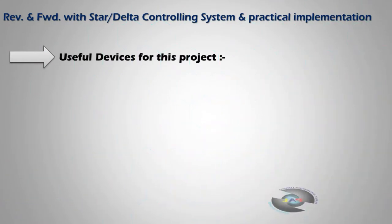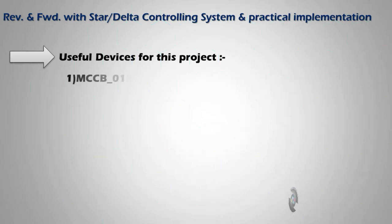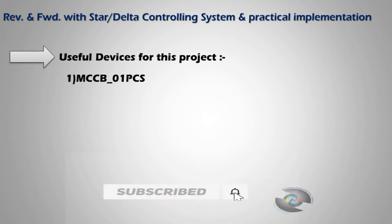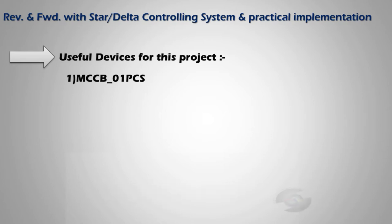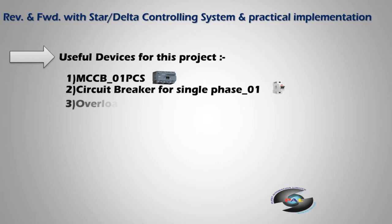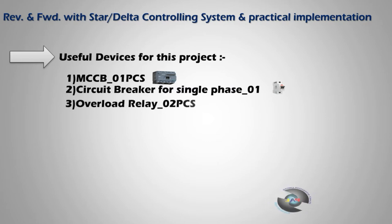The useful devices for this project: first is MCCB — for controlling or protecting any kind of three-phase line. This MCCB is used for protecting any kinds of three-phase devices. Second is a circuit breaker for single phase. Third is the overload relay — this is for much more safety from any kinds of unexpected overload.